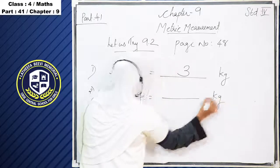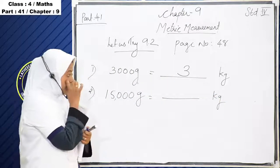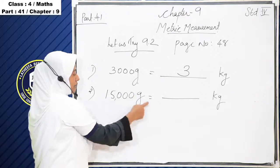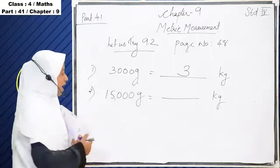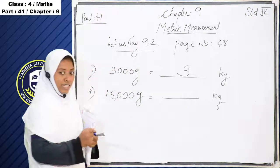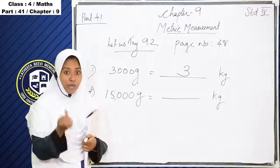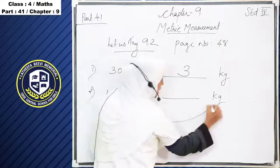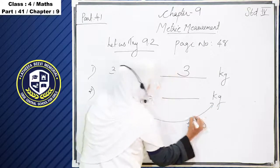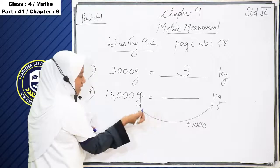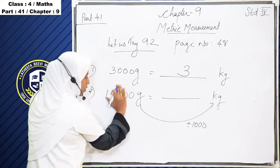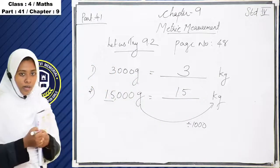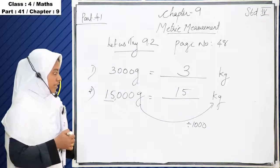Next one: 15,000 gram is equal to dash kilogram. We have to convert gram into kilogram, so we divide by 1000. 15,000 divided by 1000 — the three zeros cancel, and we get 15. So 15,000 gram is equal to 15 kilogram.